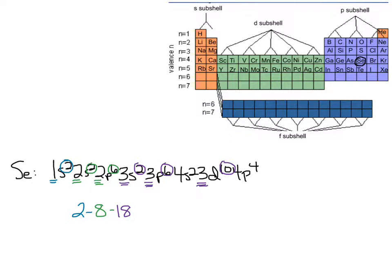Wherever there's a 3 in front — here's a 3, here's a 3, and here's a 3 — I add 2 plus 6 plus 10 and I get 18 electrons in the third energy level. That 18 is the maximum for the third energy level because it has s, p, and d subshells holding a max of 2, 6, and 10. For my fourth energy level, wherever there's a 4 in front I add up those exponents: 2 plus 4 gives me 6.